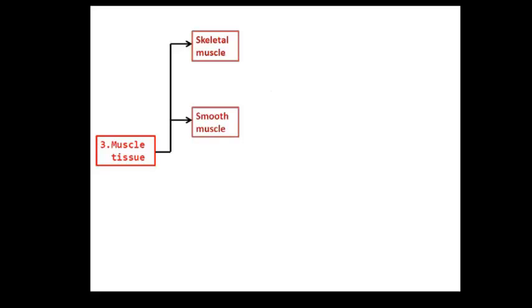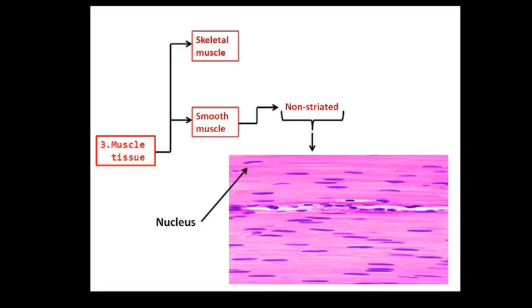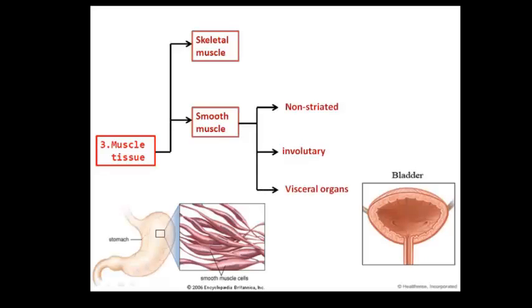The second type is the smooth muscle or non-striated muscle. It is so called because it is not striated under the microscopic view, so it is smooth. And it is not under our voluntary control, so it contracts involuntarily. Smooth muscles are mainly found within visceral organs, like our gut, our bladder and so many others.